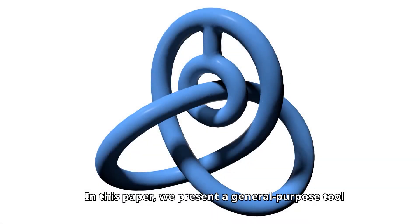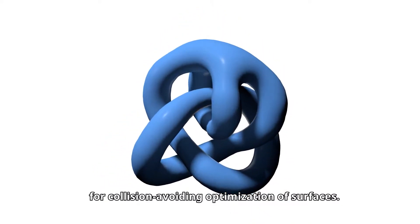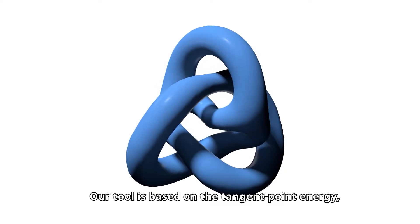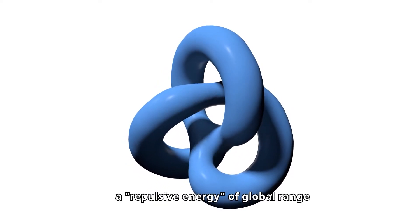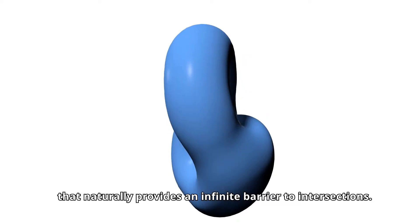In this paper, we present a general purpose tool for collision avoiding optimization of surfaces. Our tool is based on the tangent point energy, a repulsive energy of global range that naturally provides an infinite barrier to intersections.